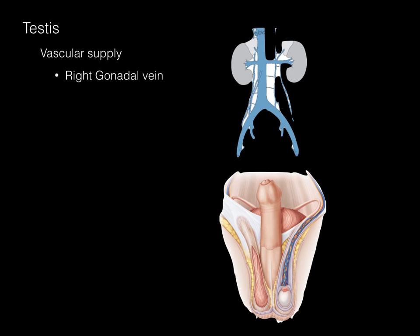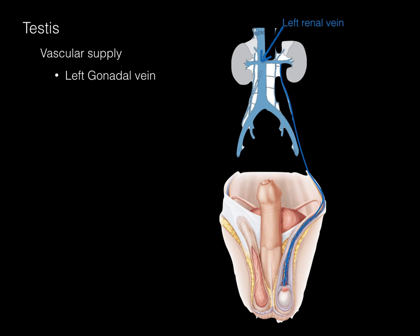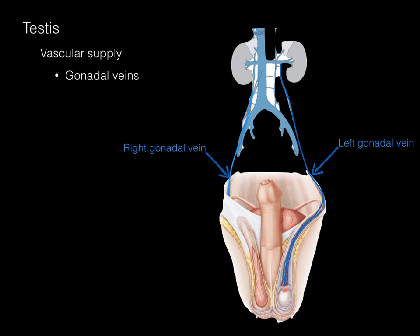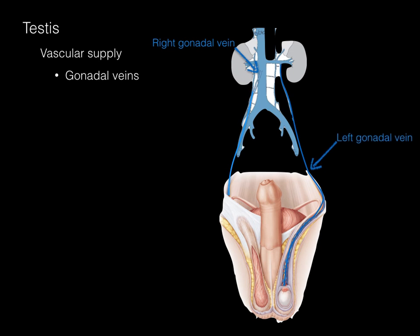The veins are not bilateral, so each side is different. The right gonadal vein takes blood from the right testis and drains directly up into the inferior vena cava. The left gonadal vein draws blood away from the left testis and drains all the way up into the left renal vein, which then empties into the inferior vena cava. So the right gonadal vein drains to the IVC directly, and the left drains to the left renal vein and then into the IVC.